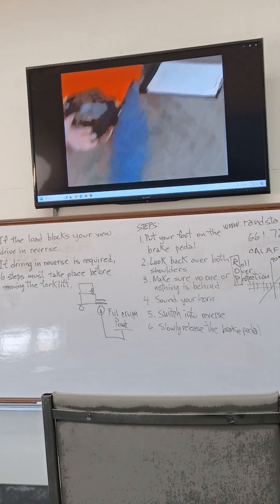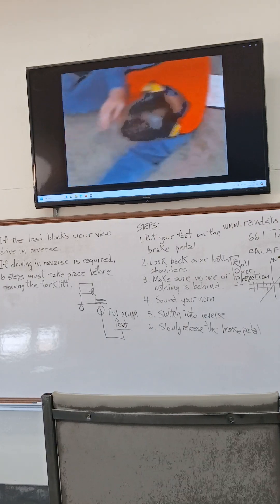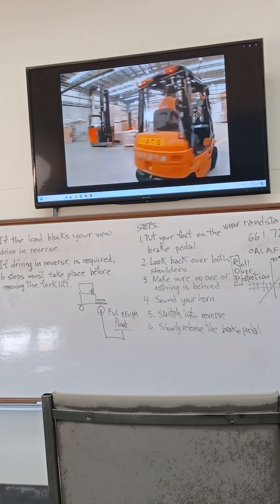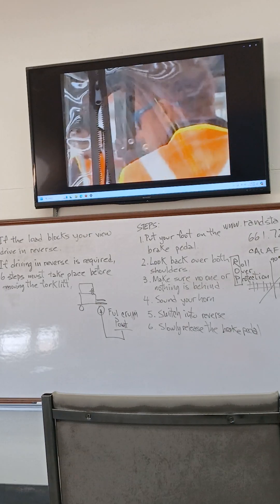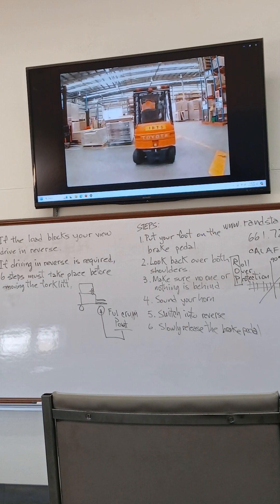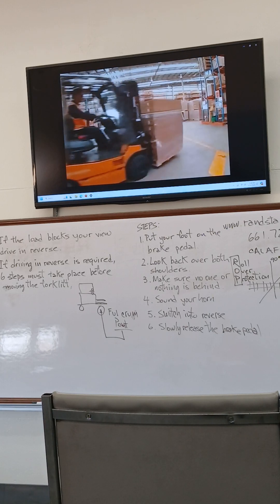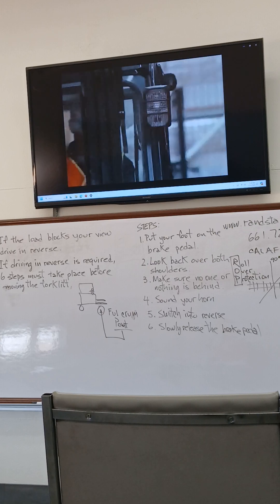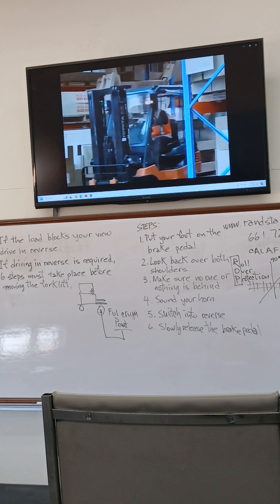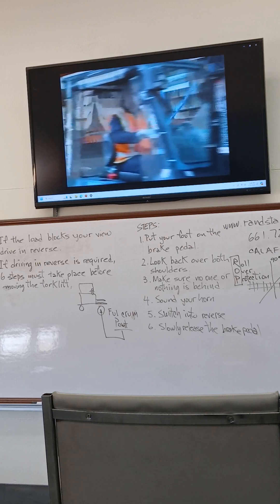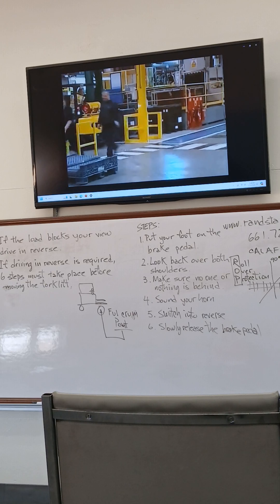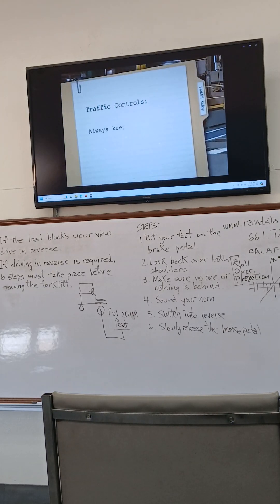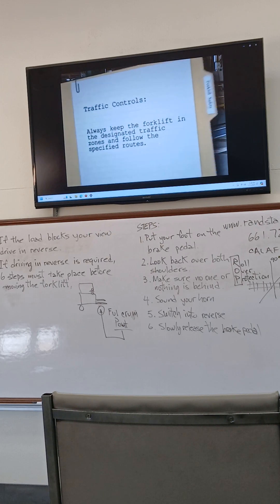Pedestrians must be excluded from areas where forklifts operate. Always take the time to look in the direction you are going to travel before moving the forklift. Use the horn to notify pedestrians or traffic that you are turning a corner or before traveling in reverse. Use indicators and warning lights at all times. Pedestrian pathways and barriers are there to help prevent collisions and accidents. Always keep the forklift in the designated traffic zones and follow the specified routes.